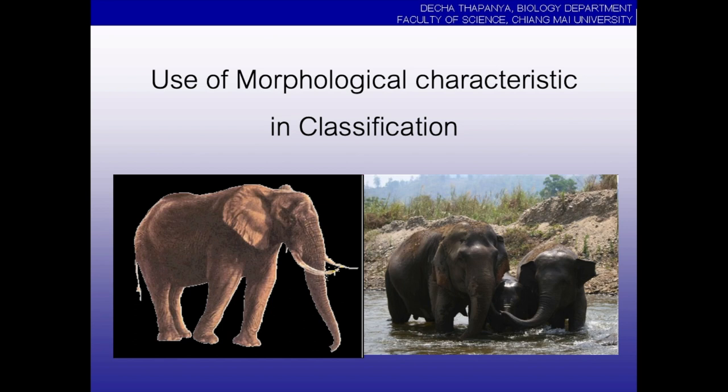Hello students. This is part four of this course. This part will be talking about the use of morphological characteristics in identification of animals.